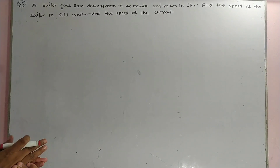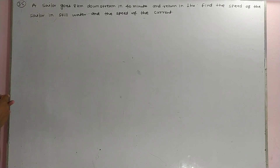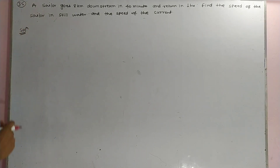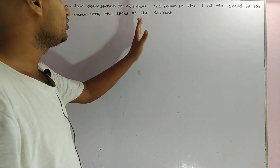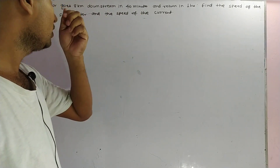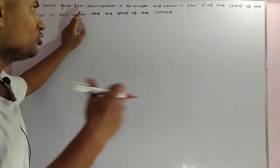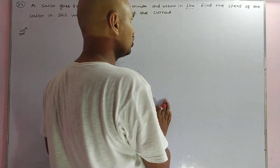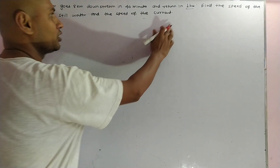Good morning, students. Today, we have to discuss question number 35. A sailor goes 8 kilometers downstream in 40 minutes and returns in one hour. Find the speed of the sailor in still water and the speed of the current.